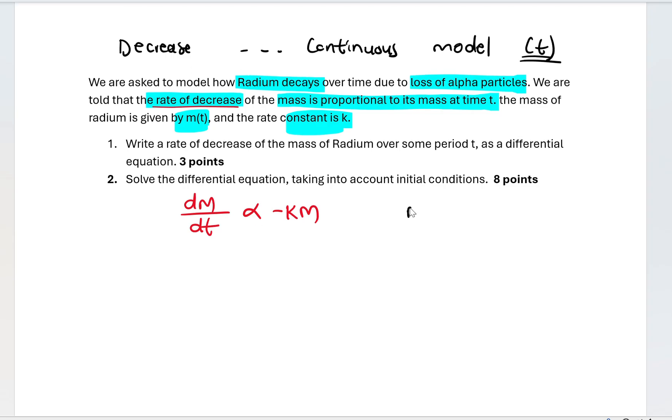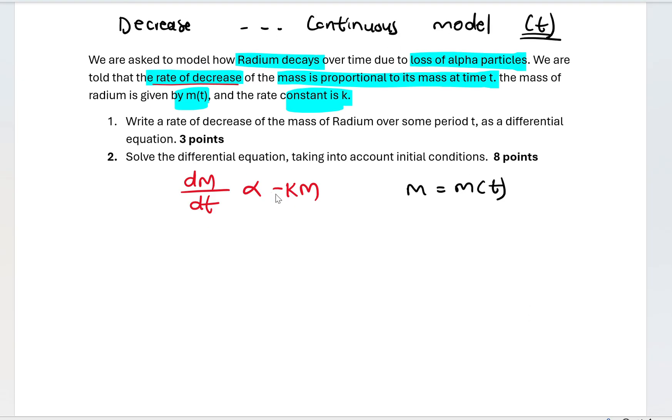They say the rate of change of mass is proportional to its mass at time t. So it's proportional to k multiplied by m. We need a negative sign because we are dealing with a rate of decrease, so it's a decay. We know that m is the same as m(t), so m is a function of time. The change in mass happens over time.